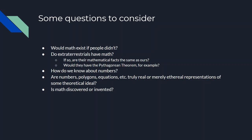Other questions: How do we know about numbers? We don't smell them or taste them. Are numbers, polygons, equations, etc. truly real objects? Are they merely ethereal representations of some theoretical ideal? And another related question: Is math discovered or is it invented? Is it something we make up, or is it something that we find?